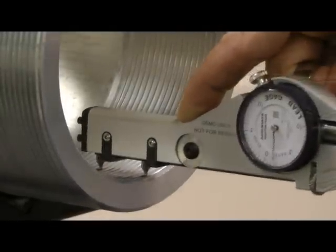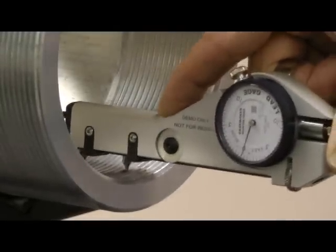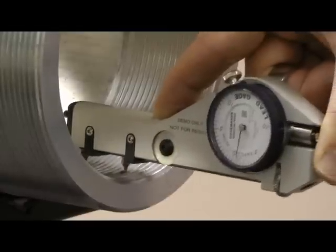Lead gauges inspect both internal and external lead for a variety of thread forms including ACME, stub ACME, and UN threads.